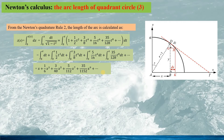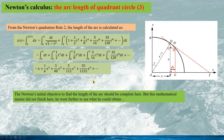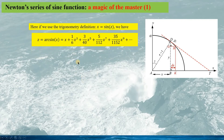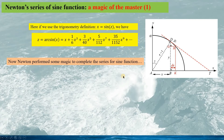So this achieves Newton's initial objective: to get the expression for the arc length z as a function of x. But Newton went further from here to see what else he could get. Using the trigonometric definition x = sin z, then z = arcsin(x), given by this infinite series. Now Newton performed some magic to complete the series for the sine function — that is, using his inverting algorithm to get the relation x as a function of z.